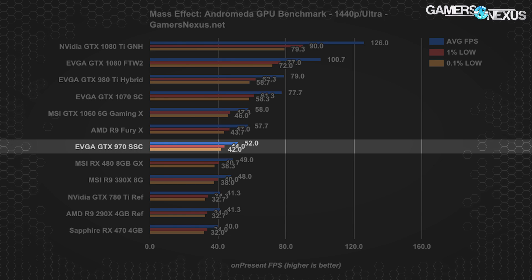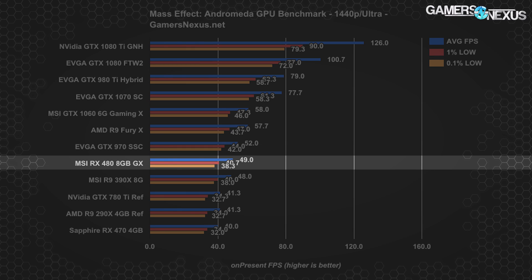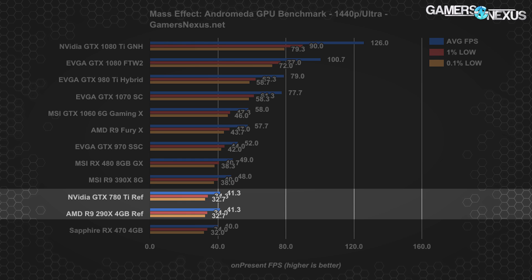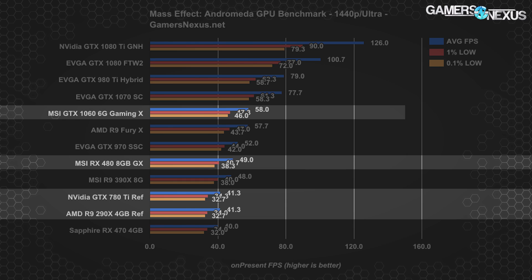The EVGA GTX 970 SSC runs about 10% slower than the 1060 but is still playable with Ultra settings. This is followed closely by the RX 480, which in the current state of the game performs about where the GTX 970 and R9 390X perform. Interestingly, both former flagships continue to exhibit their weaknesses at higher resolutions, with the 780 Ti and 290X falling below the modern RX 480 and GTX 1060 at 1440p — performing more closely to an RX 470 4GB card. Dropping any of the three trailing devices to medium settings would push you to 50 FPS if you preferred 1440p.